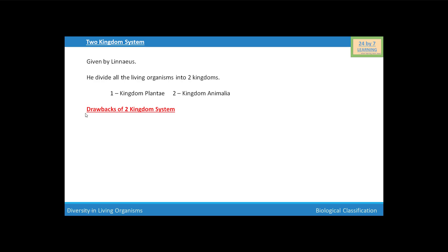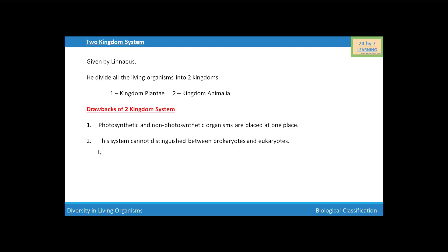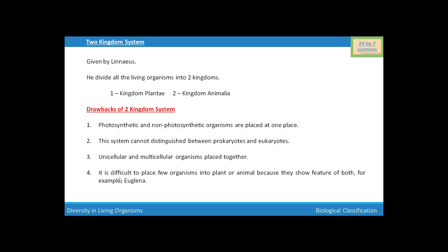But this kingdom system has some drawbacks. In this system, photosynthetic and non-photosynthetic organisms are placed at one place. This system cannot distinguish between prokaryotes and eukaryotes. Also, unicellular and multicellular organisms are placed together.